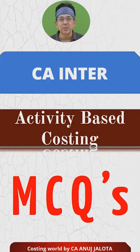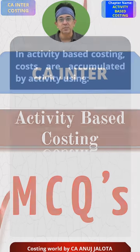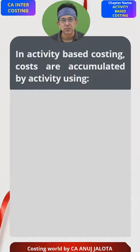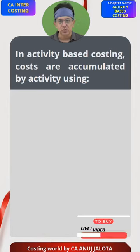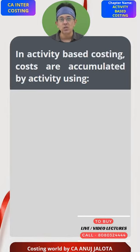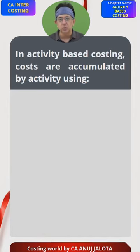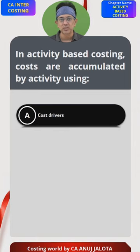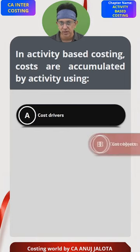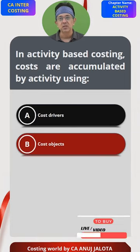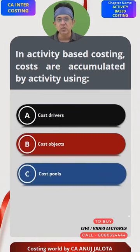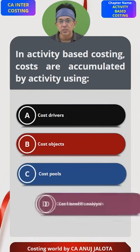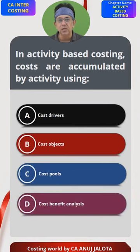Activity-based costing MCQ: In activity-based costing, costs are accumulated using — four options are: A) cost drivers, B) cost objects, C) cost pools, and D) cost benefit analysis.